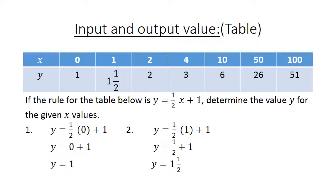If the rule for the table below is Y equals half X plus 1, determine the value Y for the given X values. We start with 0, our input. Y equals a half times 0 plus 1. Y equals 0 plus 1, and Y equals 1.